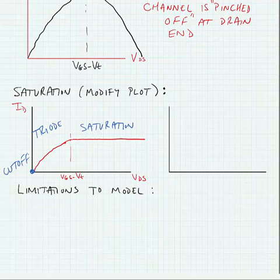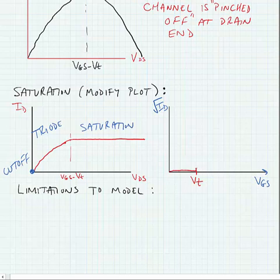Now similarly, we can plot the current as a function of VGS, or we'll plot the square root of the current as a function of VDS versus VGS, and if we were to plot this, we would see that no current flows until VGS is equal to the threshold voltage, and then the current would increase linearly, the square root of the current would increase linearly.